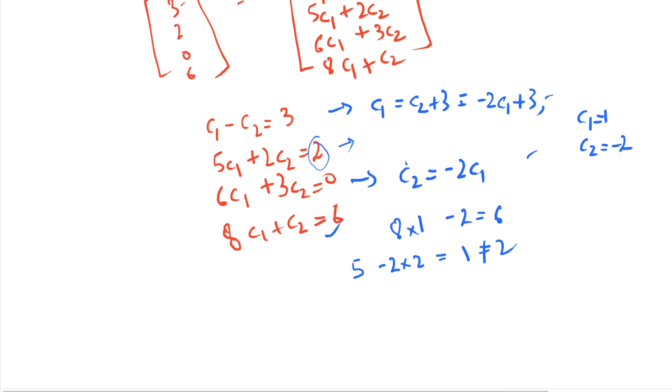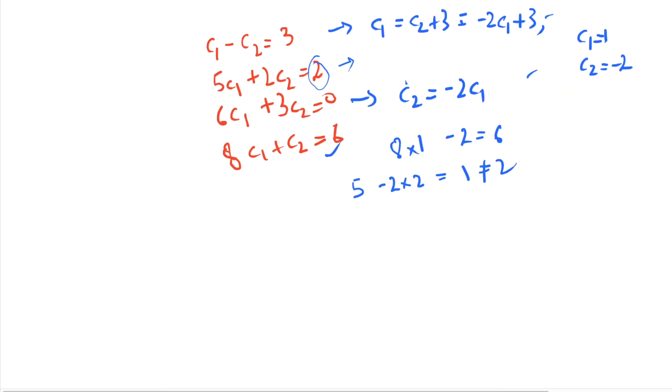A related concept here is called span. And span of vectors u1, u2, till un is a set. Let's call that set S. And it's a set of all linear combinations of these vectors. So this set will have vectors of